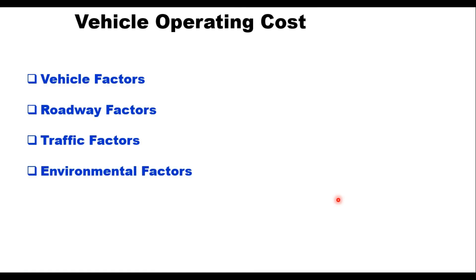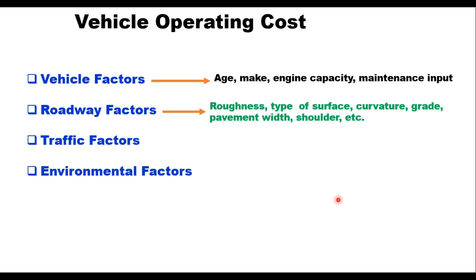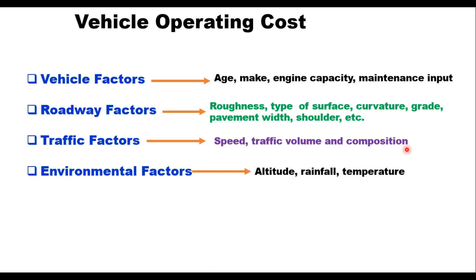Vehicle operating cost is affected by vehicle factors, roadway factors, traffic factors, and environmental factors. Research conducted in India has isolated the effect of these components. Vehicle factors include age of the vehicle, model and make, engine capacity, and maintenance input. Roadway factors include type of highway (two-lane, single lane, multi-lane, expressway), roughness, type of surface, curvature, gradient, pavement width, shoulder width, and type of pavement. Traffic factors include speed, traffic volume, composition and congestion. Environmental factors include altitude, rainfall, and temperature.